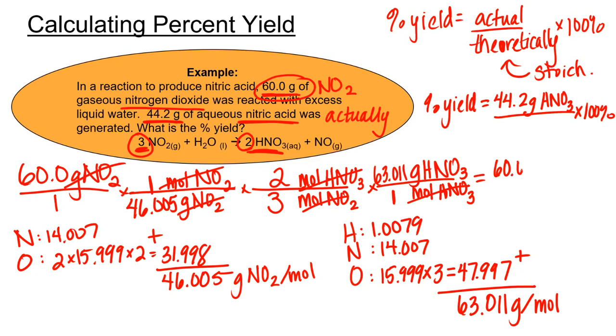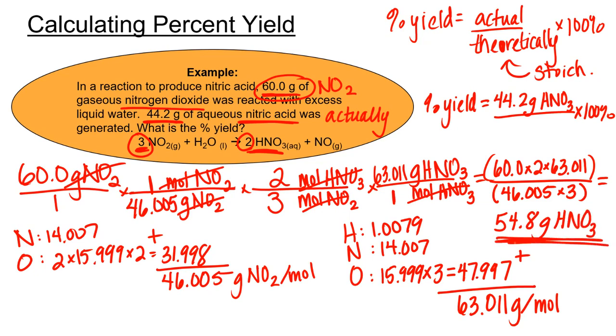We'll multiply everything in the numerator, divide by that denominator, put it in parentheses. And we get 54.8 grams of nitric acid could have been produced in theory. In theory, there were no losses from our 60 grams of NO₂. So the idea is 60 grams of NO₂ makes 54.8 grams of nitric acid. Only in theory. Only if everything were perfect.